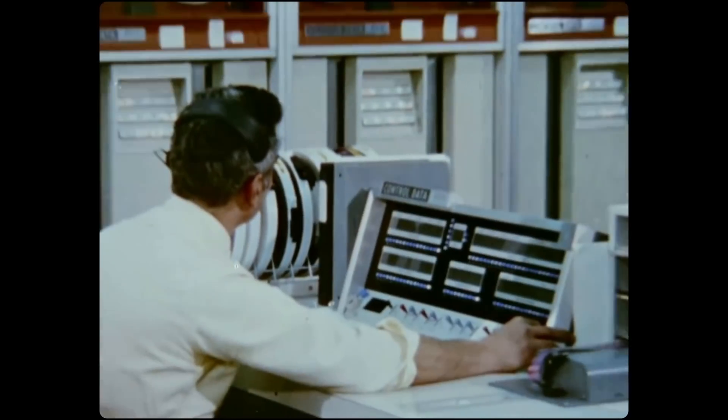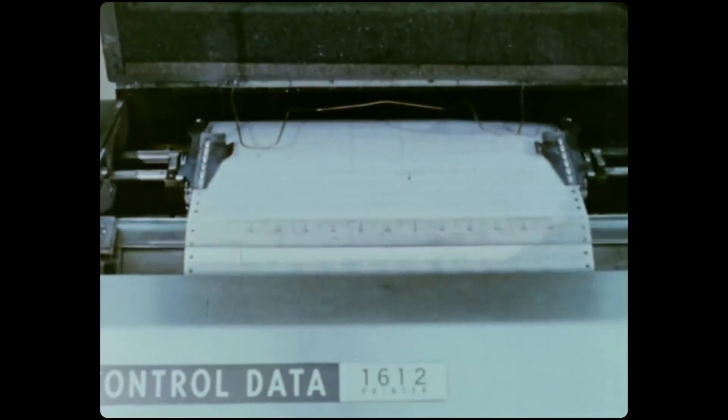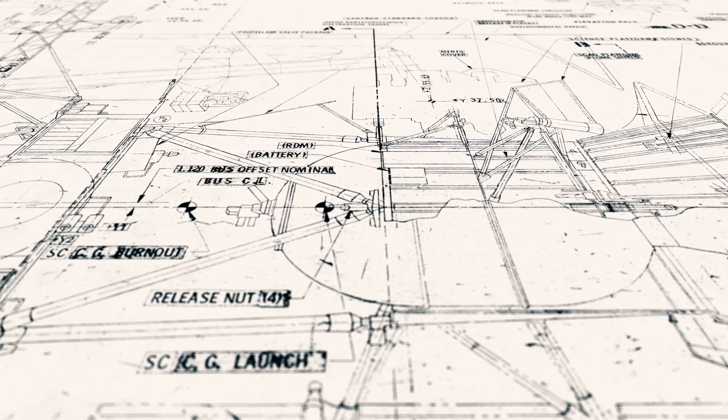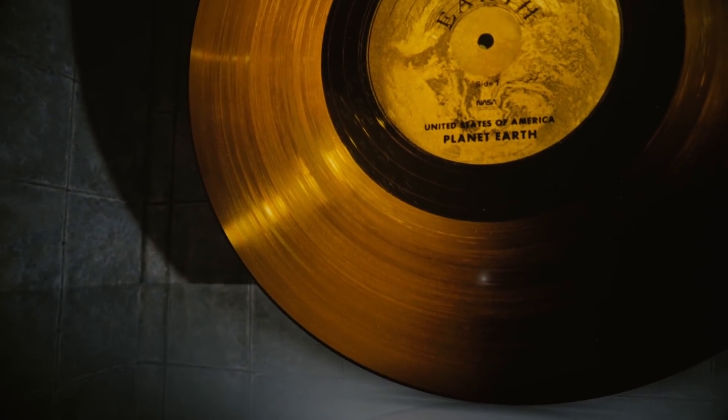Flandro already screwed himself for the sake of Voyagers. He had to use the calculations of his competitor, Minovich, and defend his idea in front of a crowd of scientists. But the Golden Record was too much. Or not.